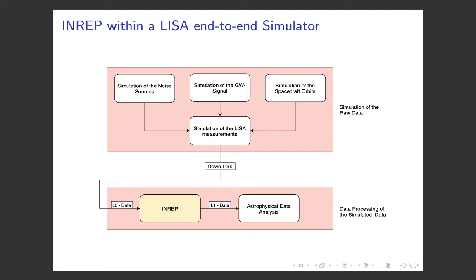Here on this slide you can see a flowchart of such an end-to-end simulator. On the upper part of this slide you can see the simulation of the LISA raw data, which could be done using LISA node. The simulated raw data is then inserted into the data processing pipeline. Within this data processing pipeline, the initial noise reduction pipeline, abbreviated as INRIP, is the first stage. The main goals of INRIP are the cancellation of the otherwise overwhelming LISA fragmented noise and the synchronization of the clocks.